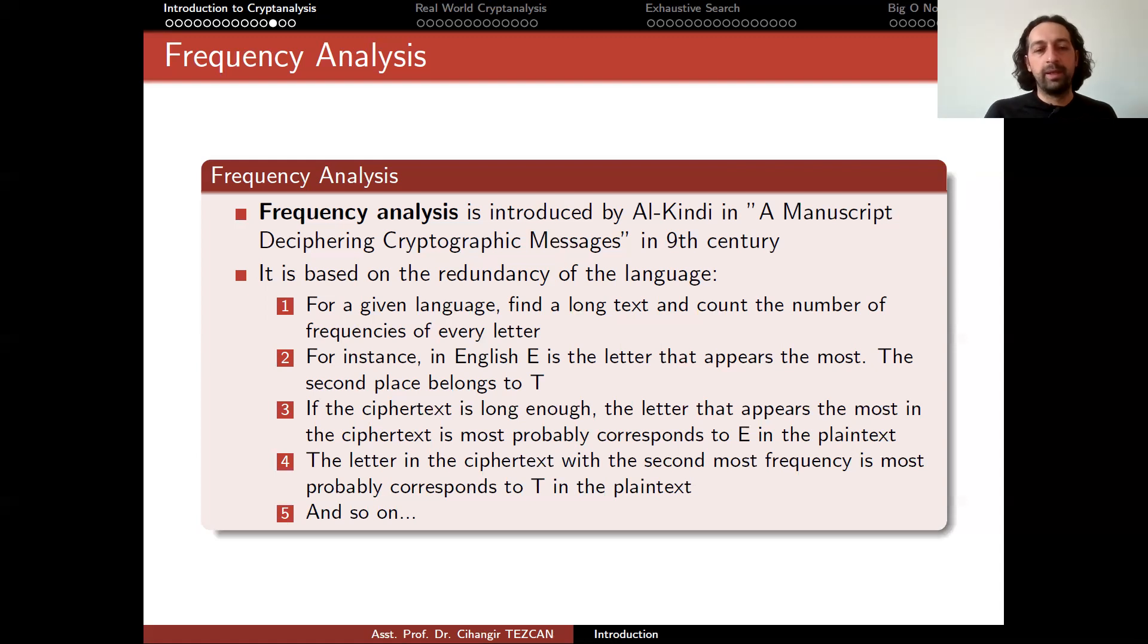In this case, it is the redundancy in the language, which is actually the probability of the letters they appear the most. So modern cryptanalysis techniques are a lot similar to this case. We find a statistical weakness in the cipher and try to exploit it to obtain some part of the secret key. So this is why this is very important. And I encourage everybody to do this.